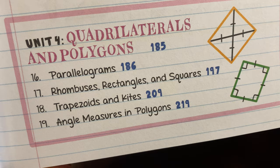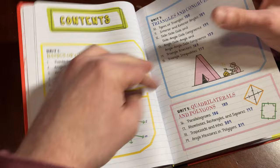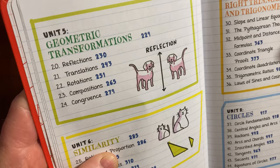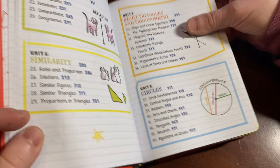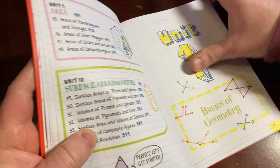Unit 4, quadrilaterals and polygons. Just even the contents are nicely laid out. I just love the way these books are laid out. Unit 5, geometric transformations. Unit 6, similarity. Unit 7, right triangles and trigonometry. Unit 8, circles. Unit 9, area. Unit 10, surface and volume. Unit 1, basics of geometry.